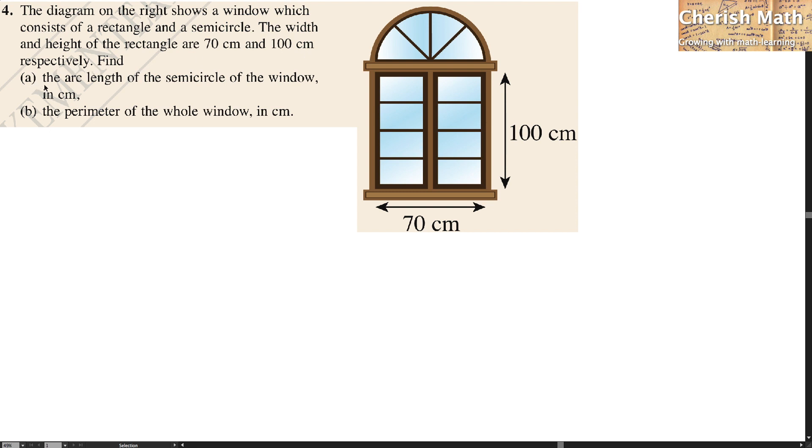Find A, the arc length of the semicircle of the window in cm. Part B, the perimeter of the whole window in cm.